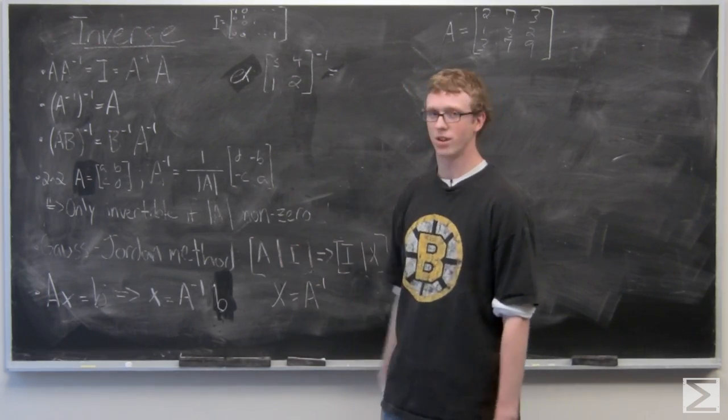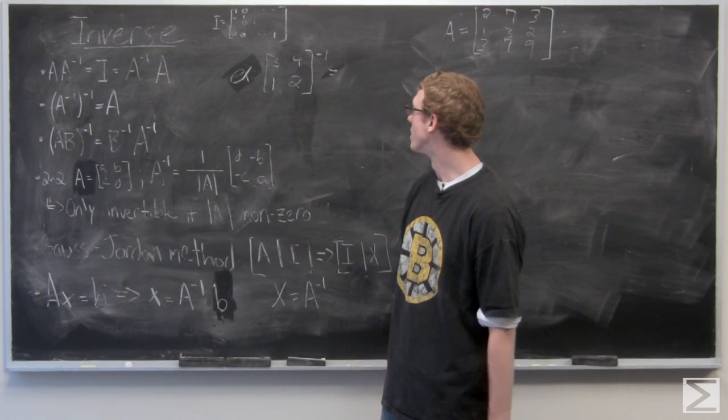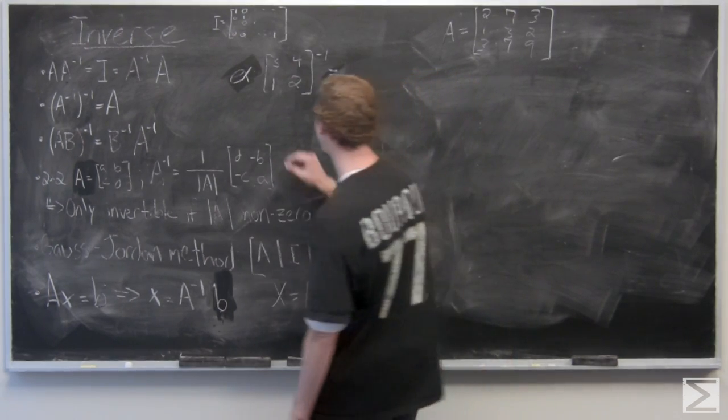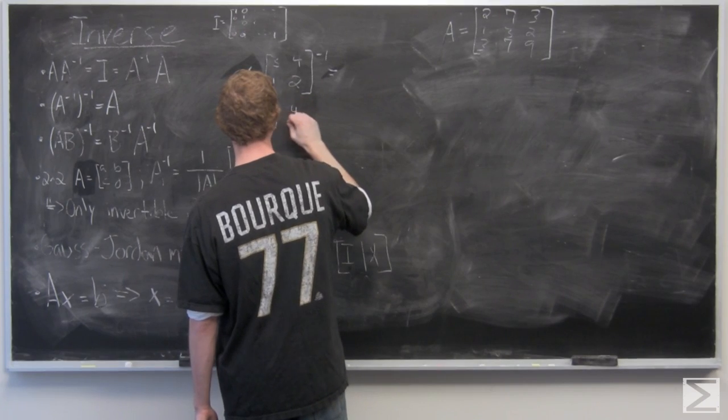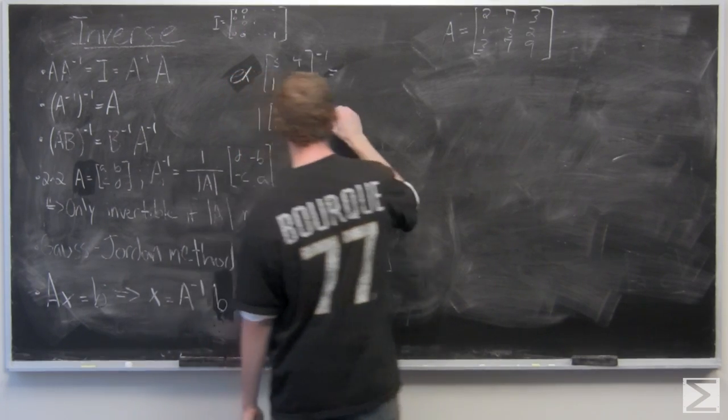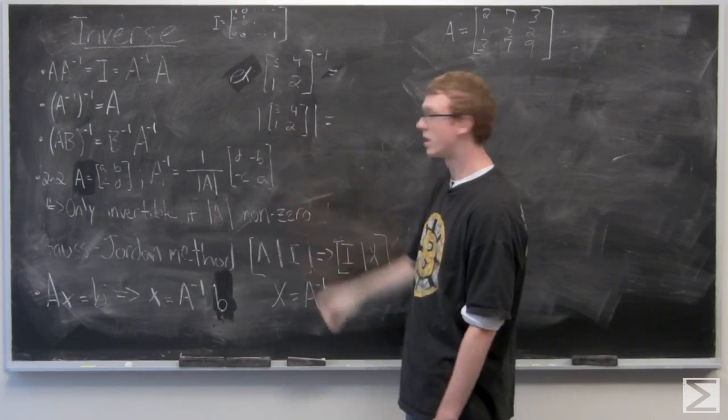So we're going to go ahead and just look at a quick example here. Let's first take the determinant of this matrix 3, 4, 1, 2. The determinant symbol is on the outside. 3 times 2 minus 4 times 1 is 2.